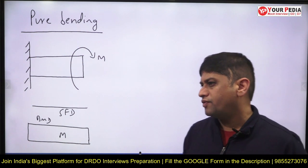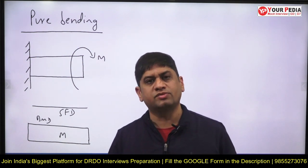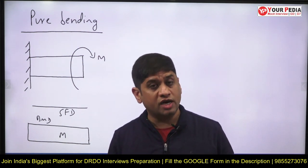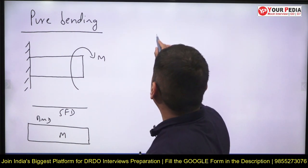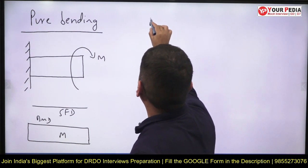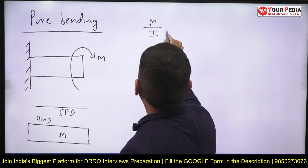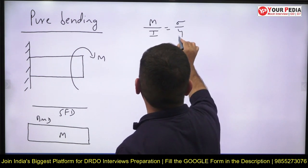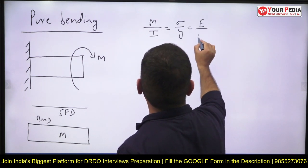For a straight beam subjected to bending, we get the simple bending equation: M/I = σ/y = E/R.